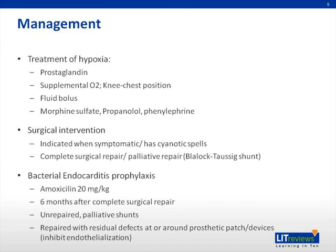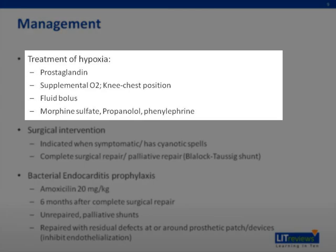The mainstay therapy for symptomatic TOF is surgical repair. Before surgery, however, prostaglandins can be given to maintain the patency of the ductus arteriosus and help maintain pulmonary flow. In the acute management of a TET spell, supplemental oxygen should be provided, and the child should be placed in a knee-chest position to simulate squatting, with compression on the iliac arteries to increase systemic resistance.